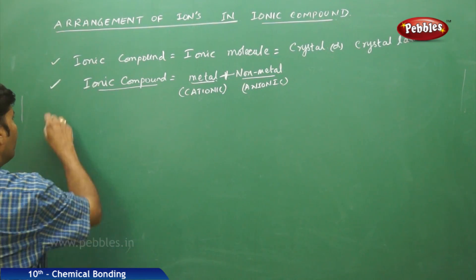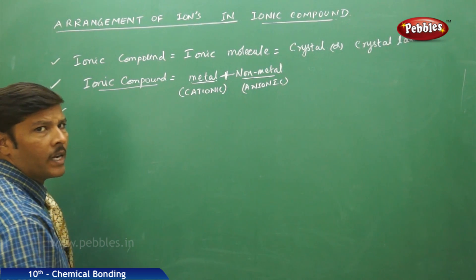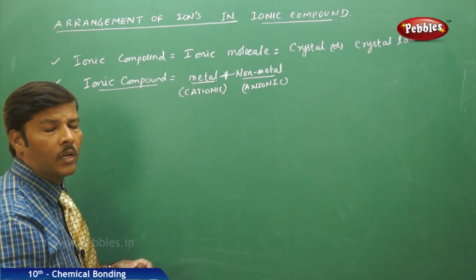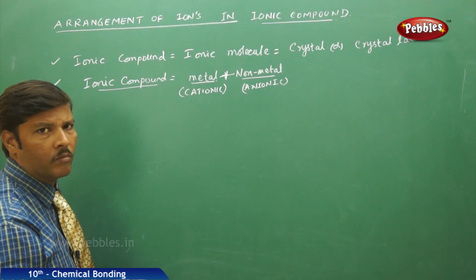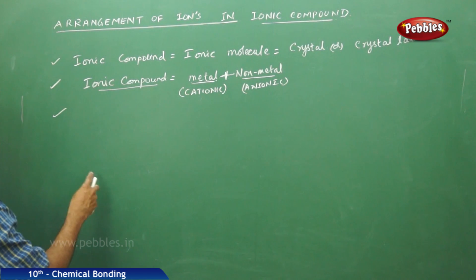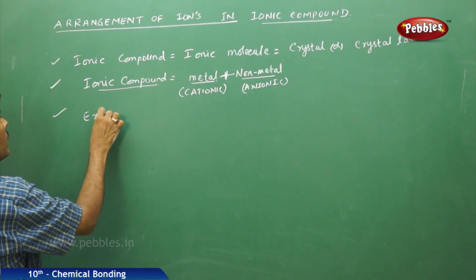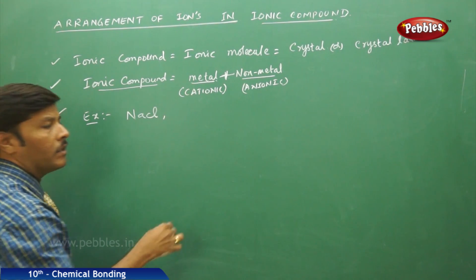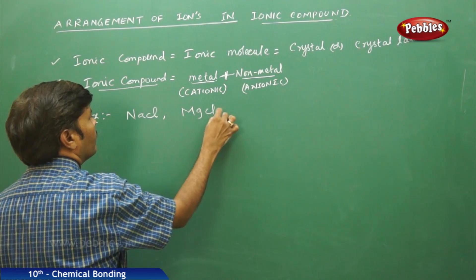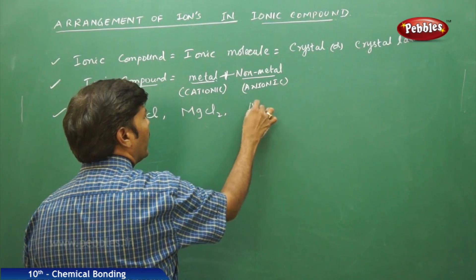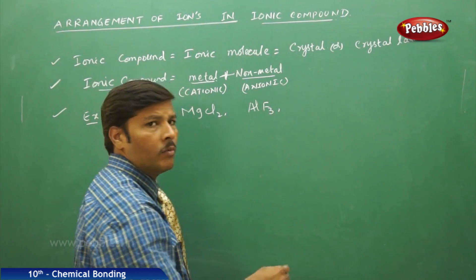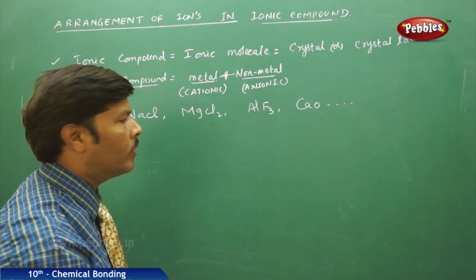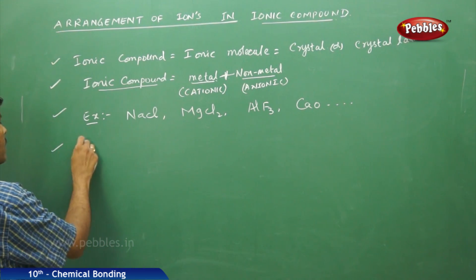The cationic and anionic species come closer to each other through the electrostatic force of attraction and they form an ionic bond. Before going further, let me give a few examples of ionic compounds: sodium chloride, magnesium chloride, aluminium fluoride, and calcium oxide. These are some examples of ionic compounds.